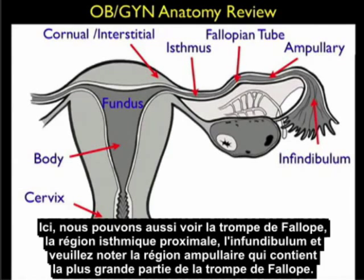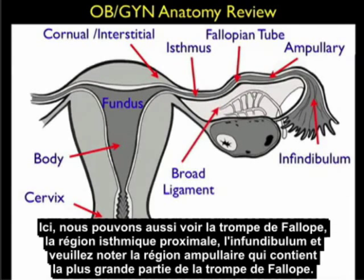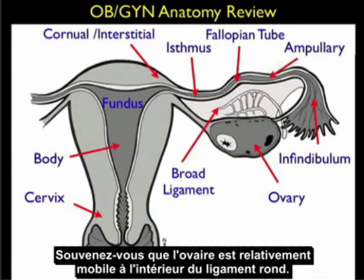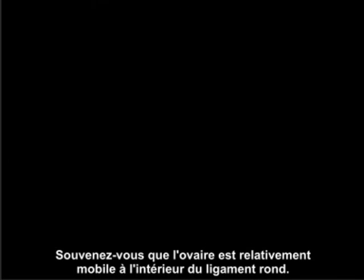Here we also see the portions of the fallopian tube — the proximal isthmal region, the distal infundibulum, and the ampullary region which comprises the majority of the fallopian tube. We also see the broad ligament which encases the fallopian tube and ovary in the lateral region of the adnexa. Remember that the ovary is relatively mobile within the broad ligament.